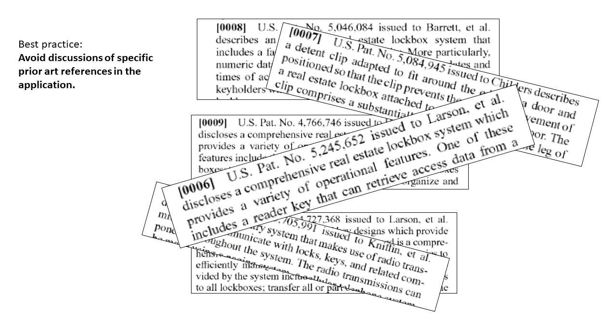Most professionals will not write this kind of stuff in the background, though some do. I know that numerous books that teach inventors how to write their own patent applications say to do this, and there are some valid reasons to go through the exercise of looking through prior art references. My recommendation to inventors is to review all the prior art you know about, understand it, understand why your invention is different and better, and emphasize those differences and advantages in your patent application — but don't discuss the specific prior art in your background.